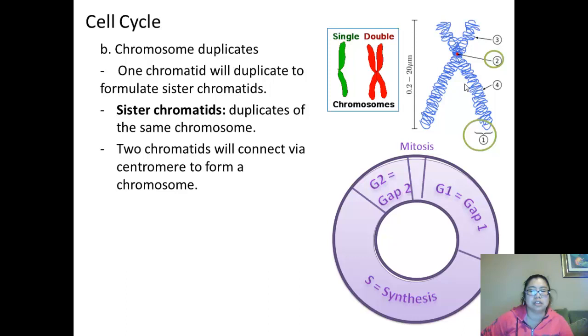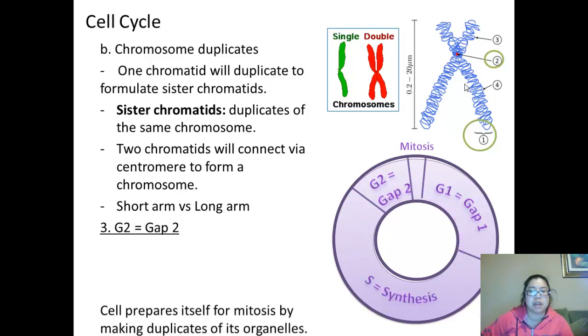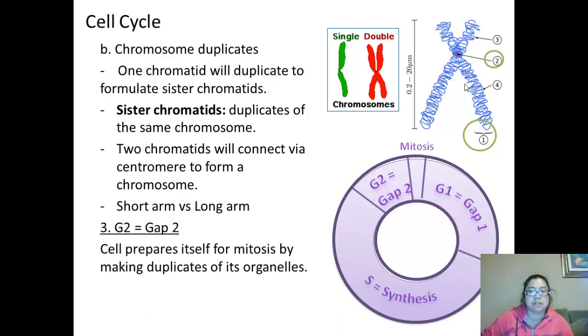Then, to identify a chromosome, they have two main parts: short arm versus long arm. Basically, what part of the X shape is short and long, and those are shown in numbers 3 and 4. The third phase is G2, GAP2. The GAP2, the cell prepares itself for mitosis by making duplicates of its organelles.